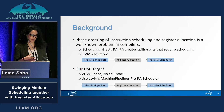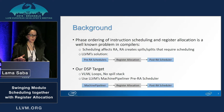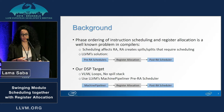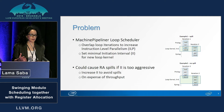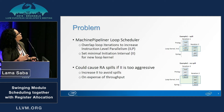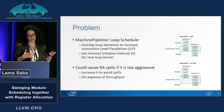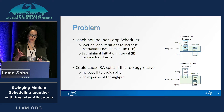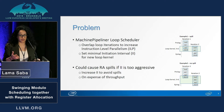Our DSP target is a VLIW target with loops and no spill stack, and we would like to use LLVM's machine pipeliner, which is a pre-RA scheduler. The machine pipeliner is a loop scheduler that tries to increase the instruction level parallelism by overlapping loop iterations. It creates a new loop kernel with the minimal possible VLIW instructions in it, called the initiation interval, the II.